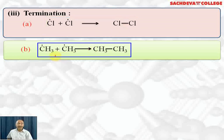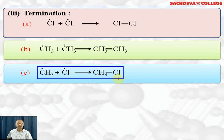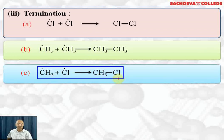It is surprising that in the halogenation of methane, a small quantity of ethane is also obtained. This is because methyl radicals are generated, and there is a chance that two methyl radicals combine with each other to form ethane. This explains why a small quantity of ethane is formed during chlorination of methane. A methyl radical can also combine with a Cl radical to form chloromethane.